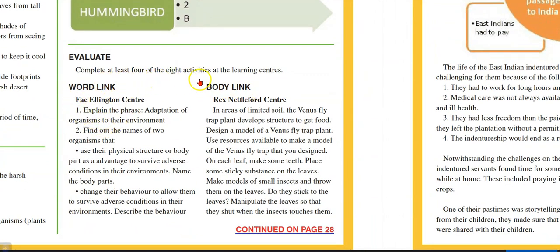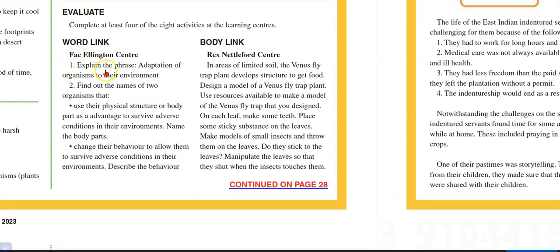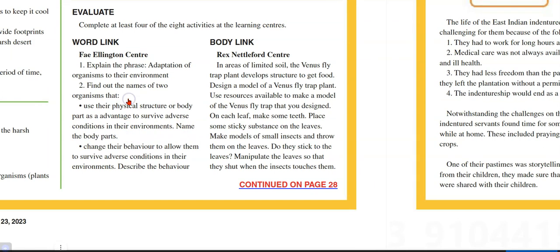Now complete at least four of these activities. One: explain the phrase adaptation of organisms to their environment; find out the names of two organisms that use their body structure or body parts as an advantage to survive adverse conditions and name the body parts. For example, a polar bear has strong legs that allow it to swim, fur that helps to keep it warm, claws it uses to hunt prey like seals, and a very good sense of smell — it can smell a seal over a mile away, even under the ice.